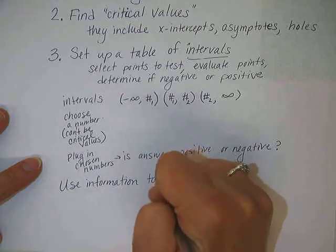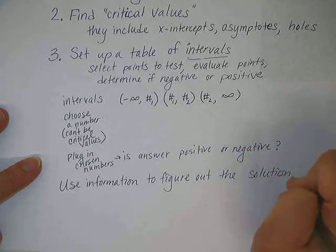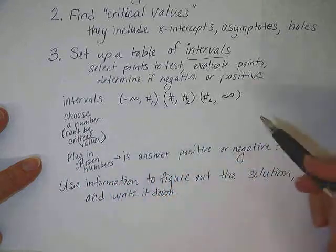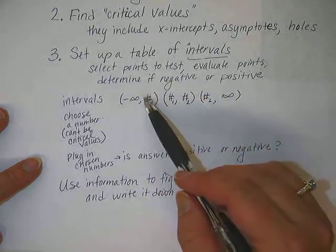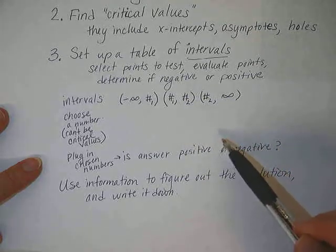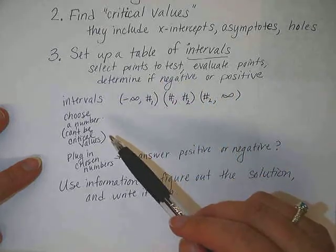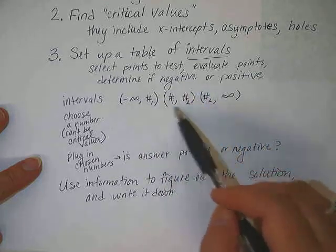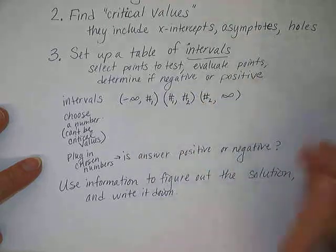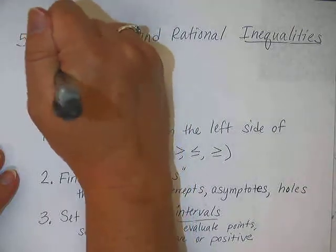The last step is to use that information to figure out the solution and write it down. For example, if you wanted a result greater than zero and you got positive, negative, positive across your three intervals, your answer would be the first and third intervals. If it was a less than problem with positive, negative, positive, the answer would be just the middle interval, since less than corresponds to the negative intervals.